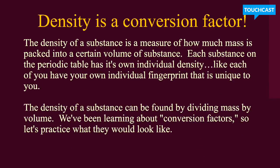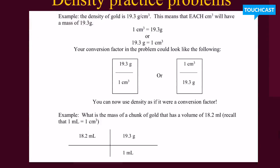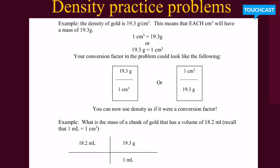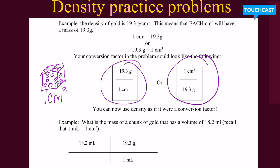Alright, the next thing that we're going to talk about is how density is a conversion factor. So most students know that density is mass divided by volume, but did you know that you can use density as a conversion factor as well? Let's take a look at an example. So here is an example. We have density of gold, and the density of gold is 19.3 grams per centimeter cubed. So basically what this means is that if I were to have exactly one centimeter cubed, you know, a little cube that's one centimeter, packed inside of here, there would be 19.3 grams of matter stuffed into that one centimeter cubed.